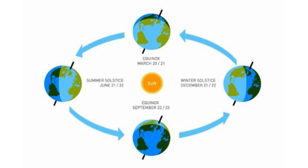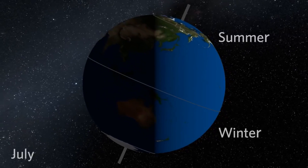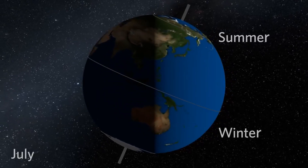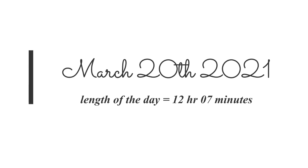This happens twice a year and we term it as equinox. If we go by the literal meaning, equinox is basically the time of the year when the length of the day and the length of the night are equal. But wait — are they really equal? The vernal equinox for 2021 was on March 20th, and if you look at the length of that day, you'll find it's around 12 hours and 7 minutes.